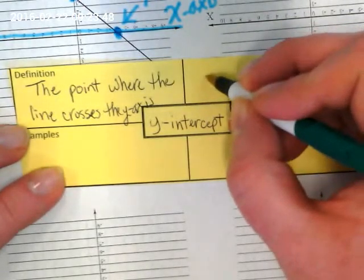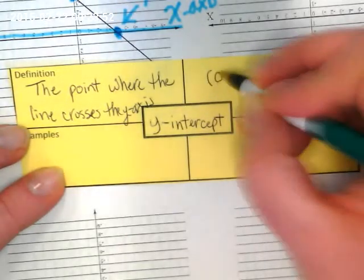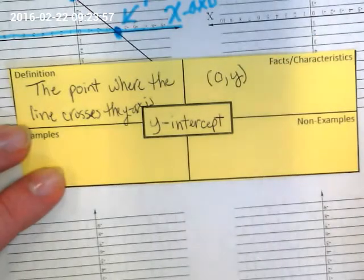A fact or characteristic is that when we have a coordinate pair, the x is always zero, and the y is some number.